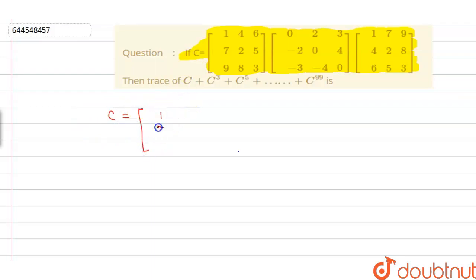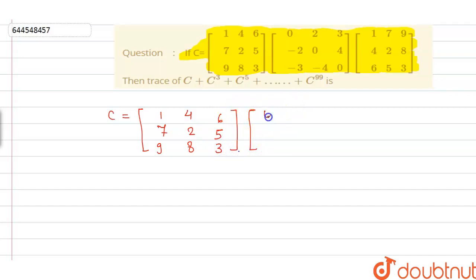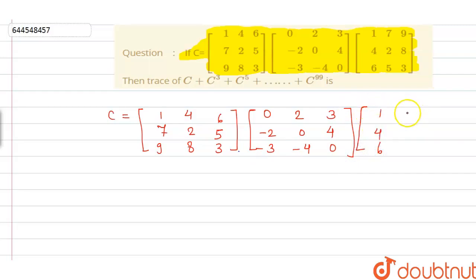We are going to perform multiplication to obtain a matrix for C. The first matrix has entries 1, 7, 9, 4, 2, 8, and 6, 5, 3. The second matrix has entries 0, 2, 3, -2, 0, 4, and -3, -4, 0. The last matrix has entries 1, 4, 6, 7, 2, 5, and 9, 8, 3.